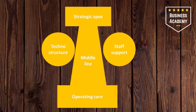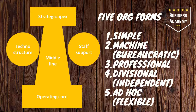As you will see, Mintzberg created five different structural organisational types. The five organisational forms are Simple, Machine (otherwise known as Bureaucratic), Professional, Divisional (sometimes referred to as Independent), and Ad Hoc, which is known as the flexible organisation structure. We're going to deep dive into each one of these structures and try to give you an example to help this come to life.